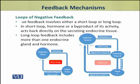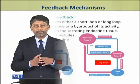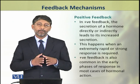In the short loop, the hormone or its byproduct acts back directly on the secreting endocrine tissue, thereby inhibiting its own release. The long loop feedback also follows the same principle of negative feedback, but here more than one endocrine gland and more than one hormone are involved. Now we shall discuss positive feedback.